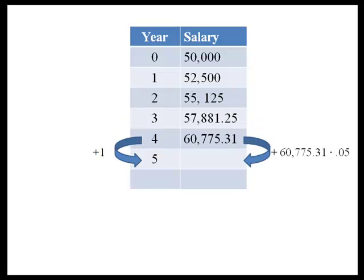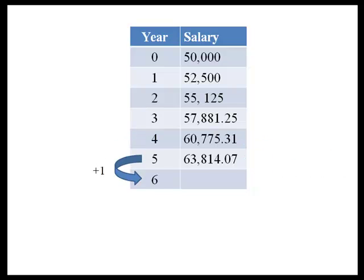So we can use that to fill in our table. We see that after six years of working for the company, we're going to be making $67,004.78. Notice we do not have a constant rate of change — what we have is an increasing rate of change.